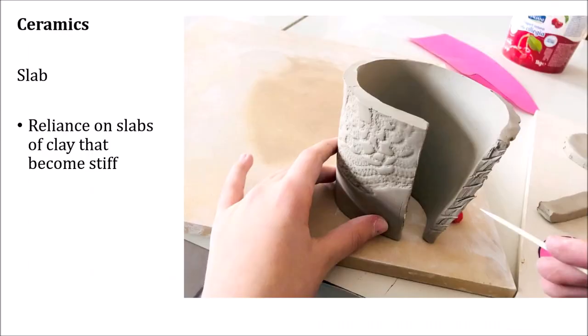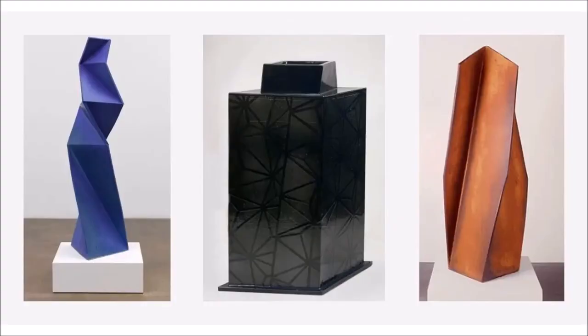Another technique ideal for ceramics is slab building, which again results in a hollow sculpture. With slab building, as the name implies, you rely on slabs — you roll out your clay with a rolling pin as if you're making cookie dough, then let it sit. If you want a cylinder, you put it in a cylindrical shape and let it stiffen up, then glue it together with other pieces of clay. If you want a box, you might have different squares of clay and once they stiffen up, you glue them together with clay.